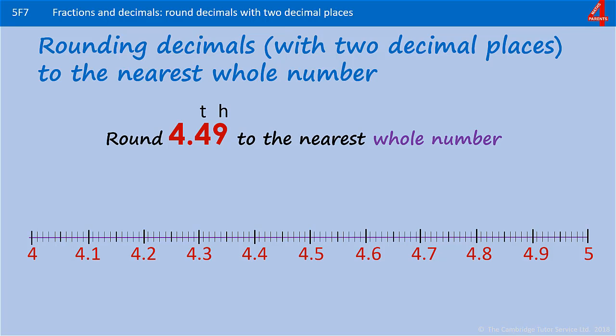It can be a little bit confusing when we get something like 4.49 because that 9 often tricks us into thinking that we've got to round up. If we look at that on the line, 4 ones and 4 tenths, and we're going to go up 9 hundredths. So from 4.4 to 4.41, 4.42, and we keep adding on a hundredth until we get to 4.49. And you can see that that's just before the 4.5. 4.5 is the halfway mark where we would round up.